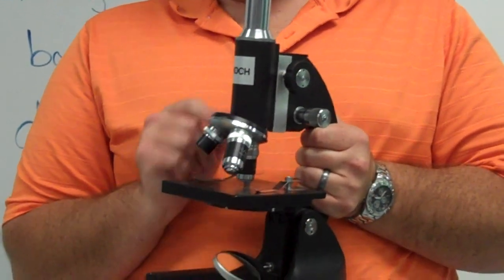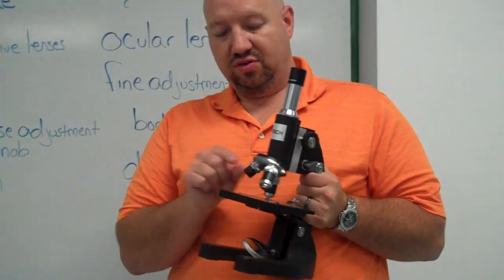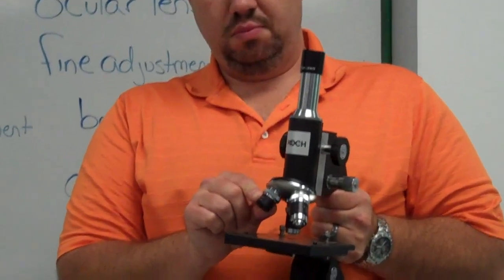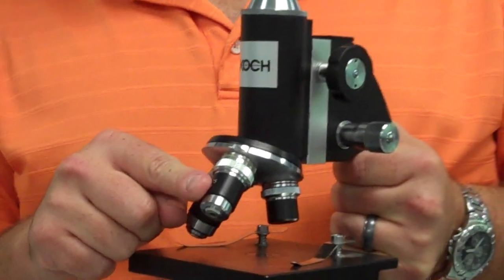These are known as the objective lenses. Now for our microscopes, we have three objective lenses. We have a 4x magnification, a 10x magnification,